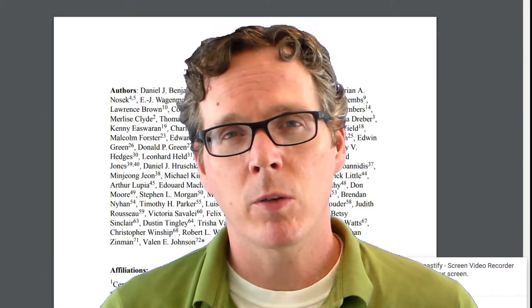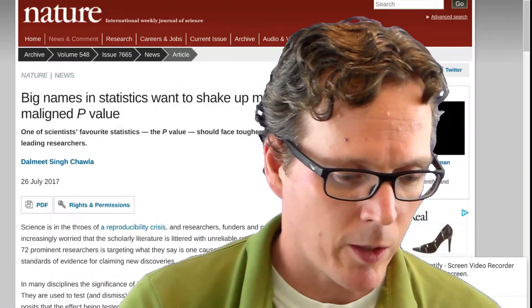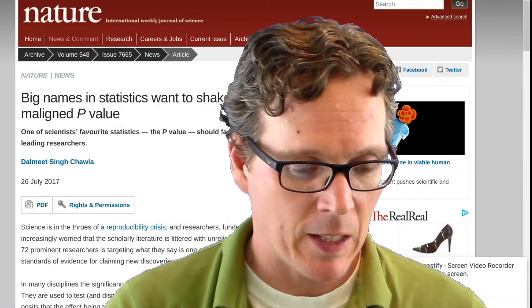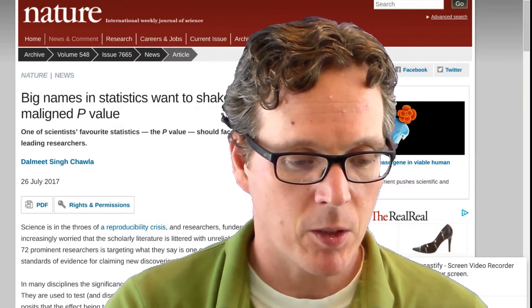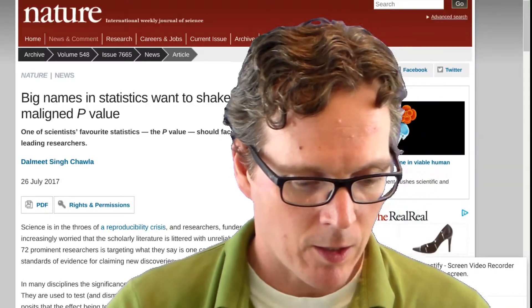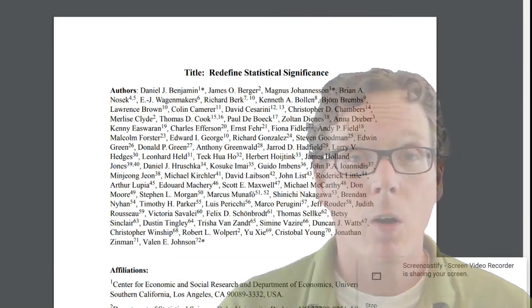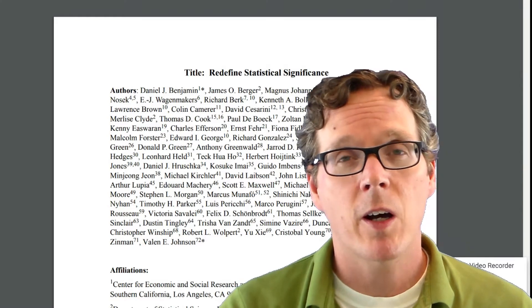This week I'm going to talk about an important preprint that came out, and it's big enough to where it was written up in Nature. Big names in statistics want to shake up the much maligned p-value. It was written up in Science. And so here's the paper. It has a lot of authors. They're very esteemed, very accomplished authors.